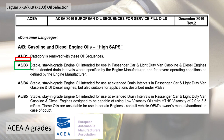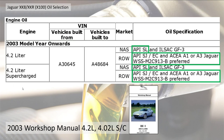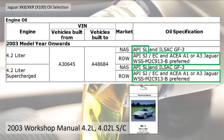So A3 gave me a bit of light at the end of the tunnel. I then looked at a later 1999 workshop manual for the 4.0 litre, which lists API SH or SJ and ACEA A2 or A3. Then I looked at the 2003 workshop manual, which added API SL, and this specification came up: WSS-M2C913-B preferred. That looked like the key one to focus on.